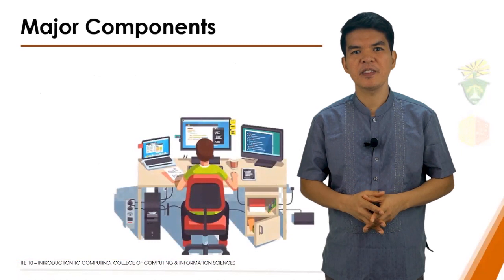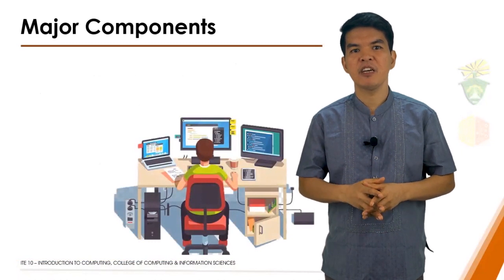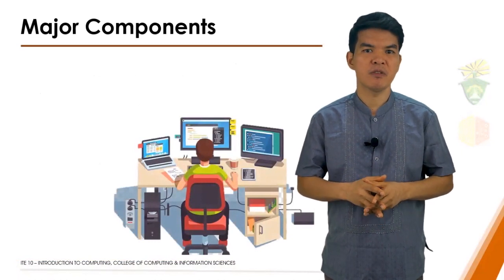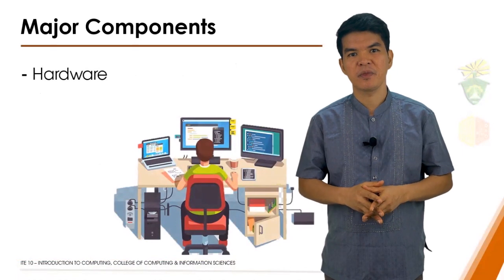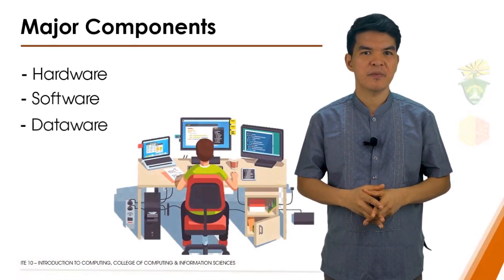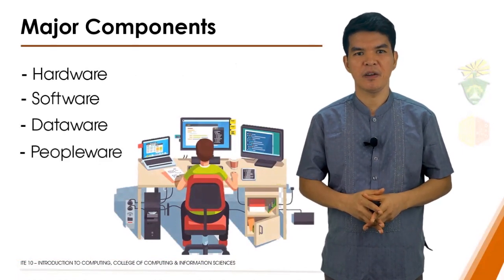A computer system is made up of four major components: namely, hardware, software, dataware, and peopleware.